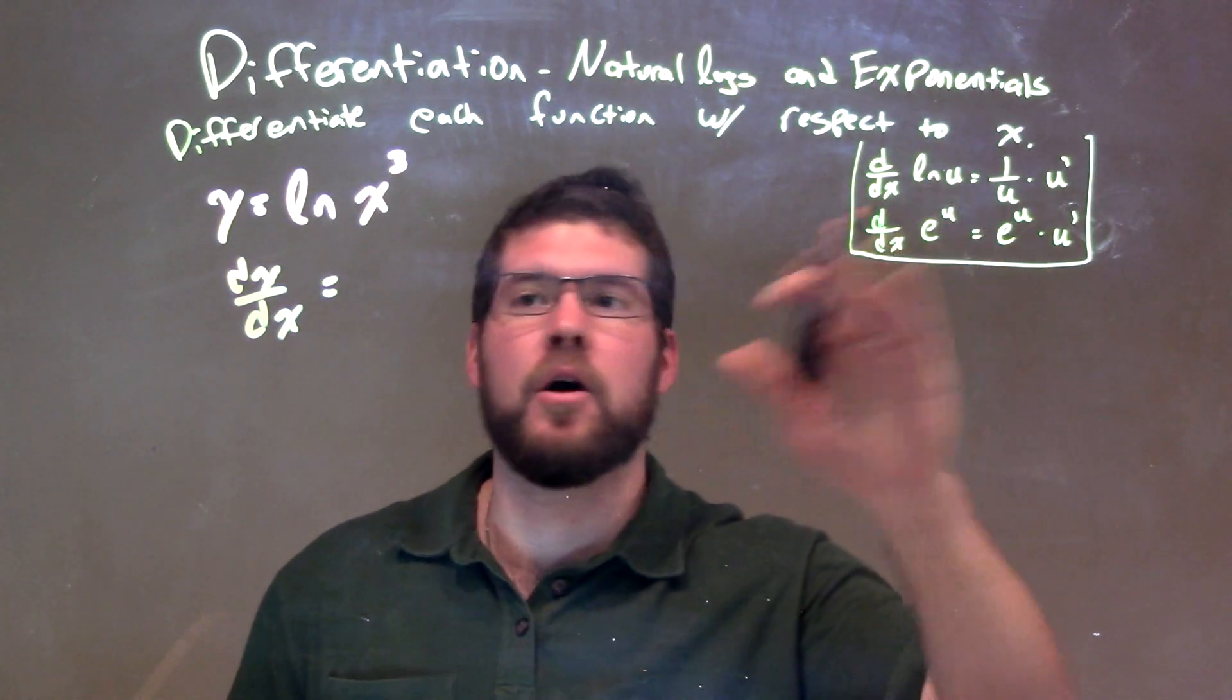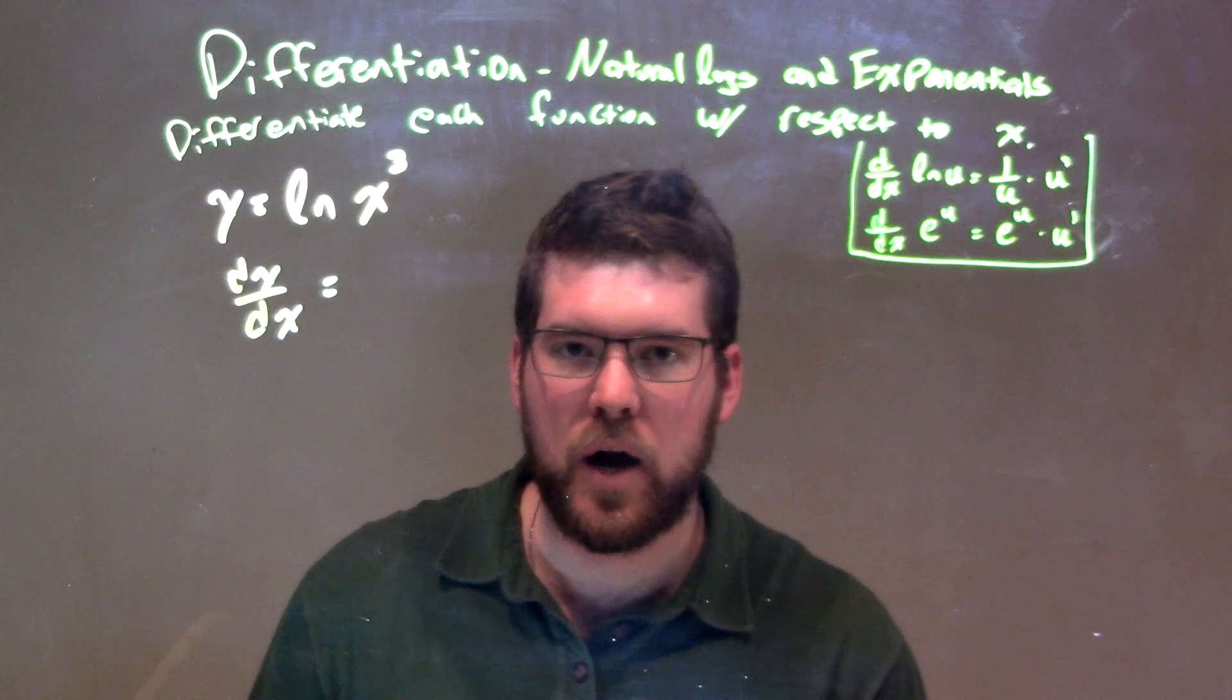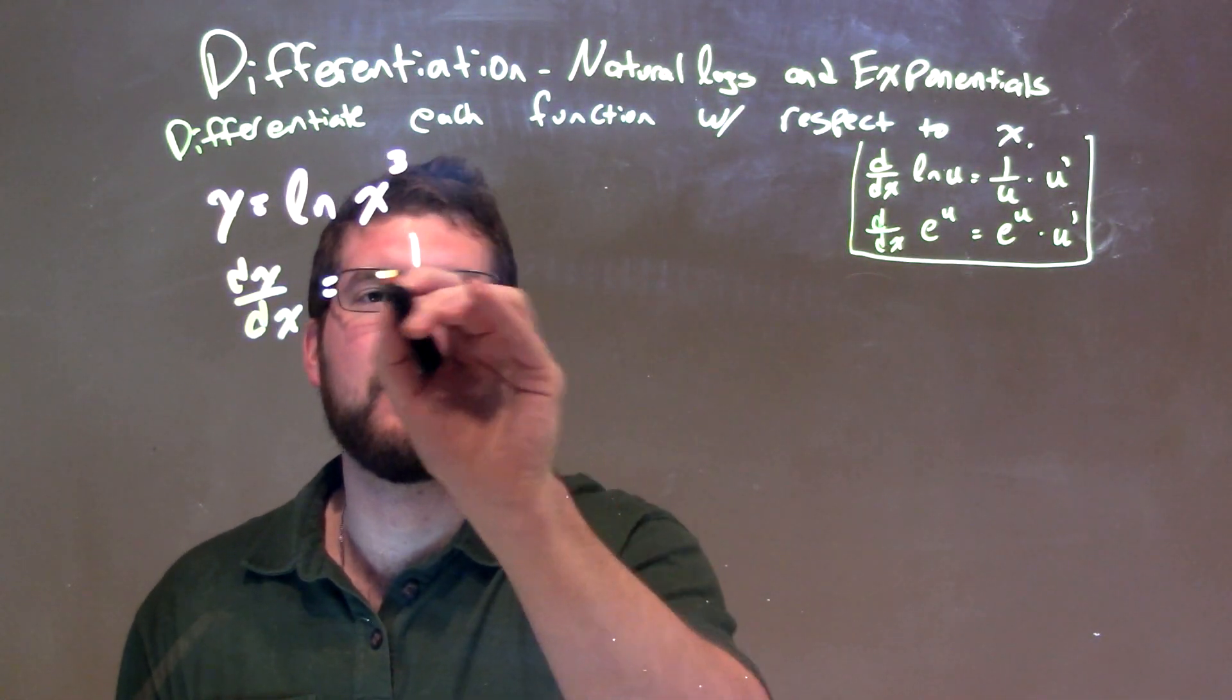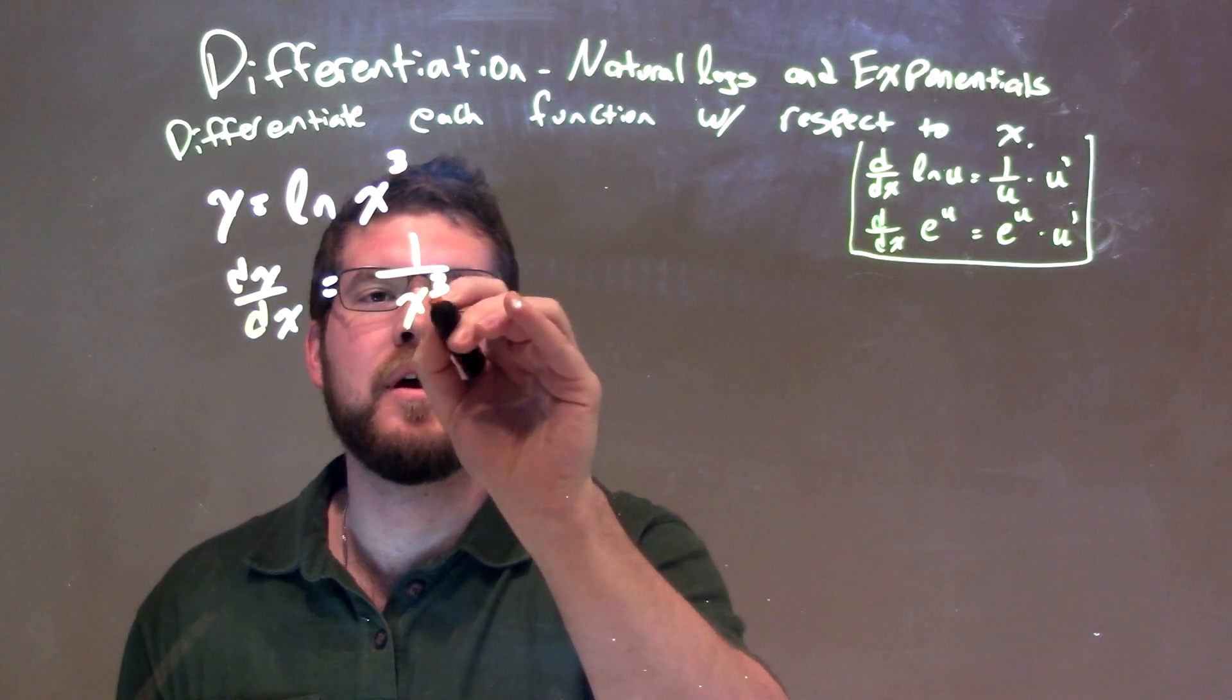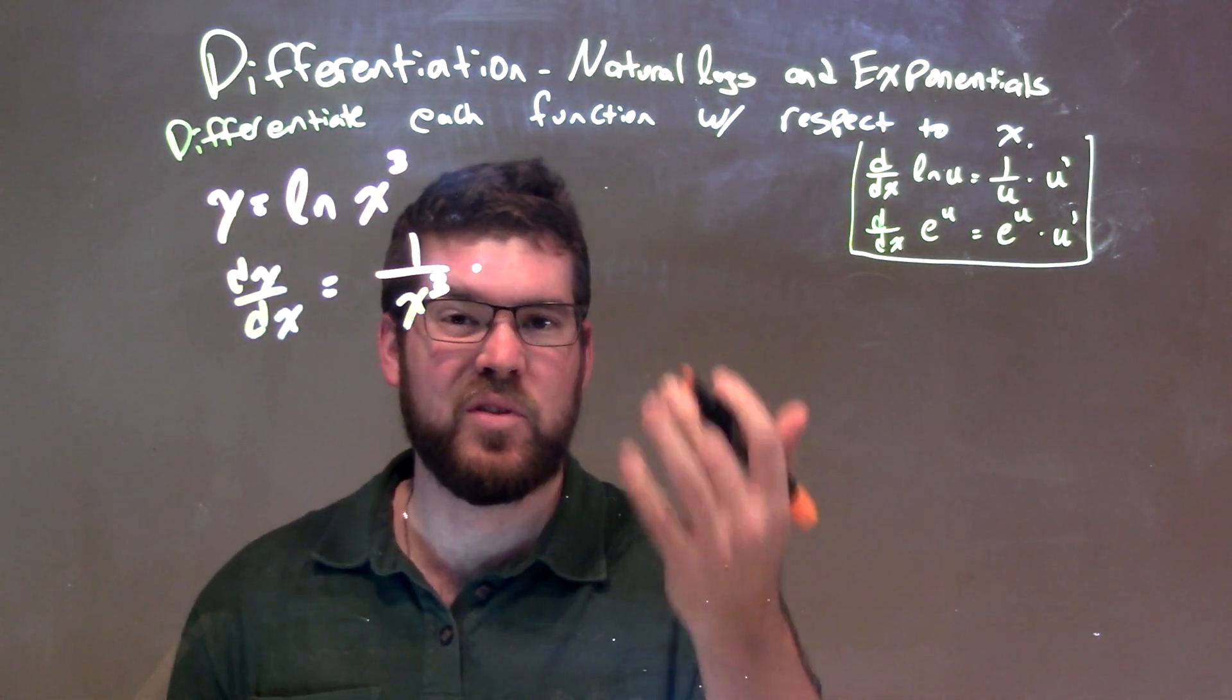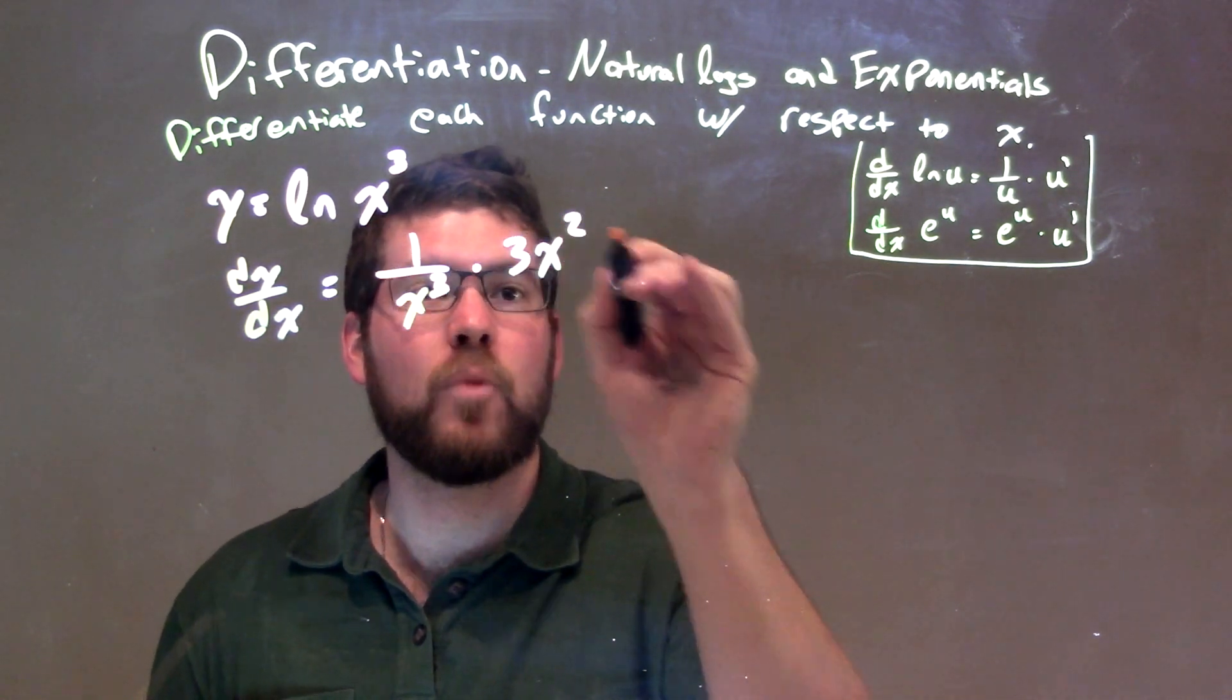Now, the derivative of natural log of u, some function with respect to x, is 1 over u times u prime. So, we have 1 over x to the third, and now we can take the derivative of the inside. Derivative of the inside, x to the third, using the power rule here, is 3x squared.